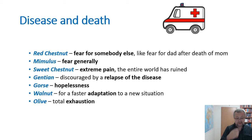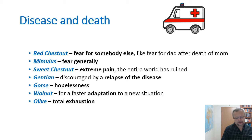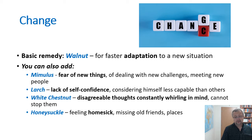Additionally: Red Chestnut for fear for somebody else; Mimulus for fear generally; Sweet Chestnut for extreme pain and suffering where the whole world has been ruined by bad news; Gentian for being discouraged after a relapse; Gorse for hopelessness when the person sees no hope; Walnut for faster adaptation to a new situation such as after an operation like amputation; and Olive for total exhaustion. For hospital stays, many people are also distressed by having to go to the hospital.